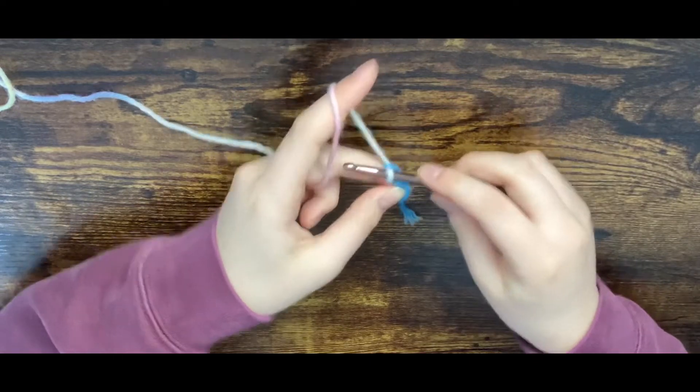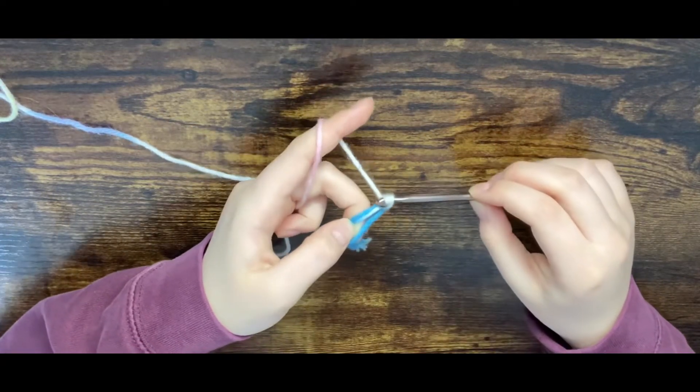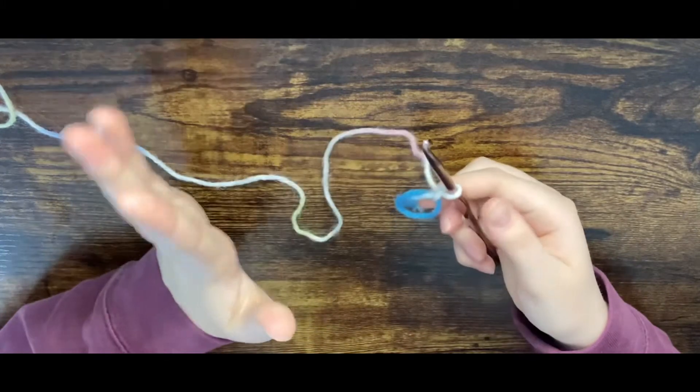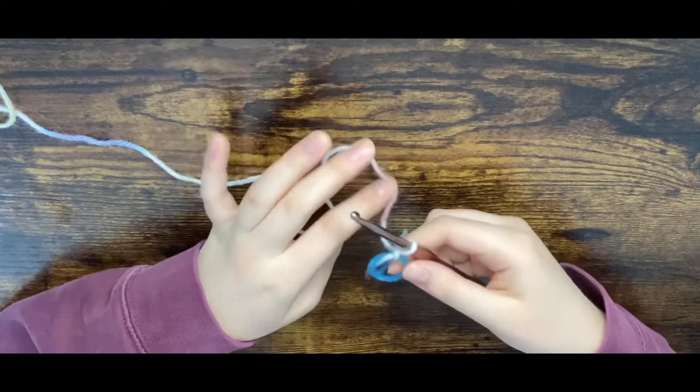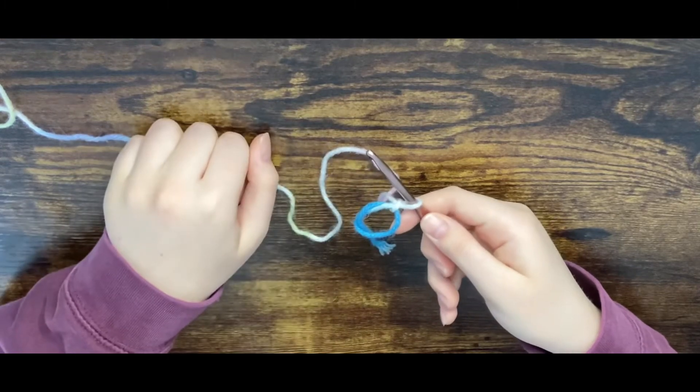Then you're going to chain one. Yarn over and pull through your loop and that secures it so you don't have to worry about it. So that's just the tricky bit. Now you have a loop to work in.